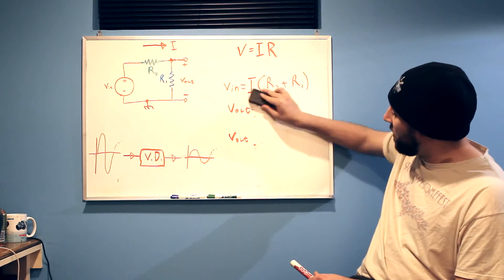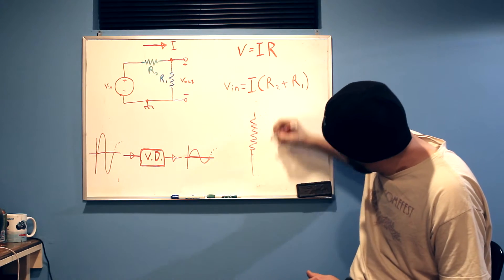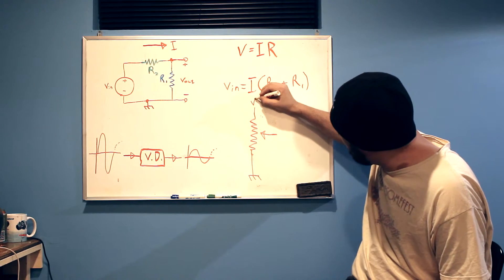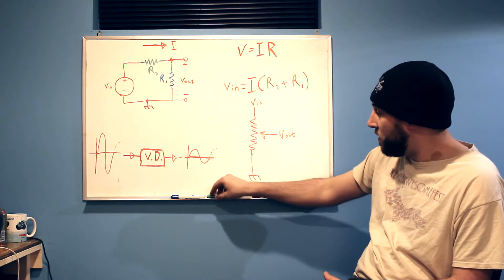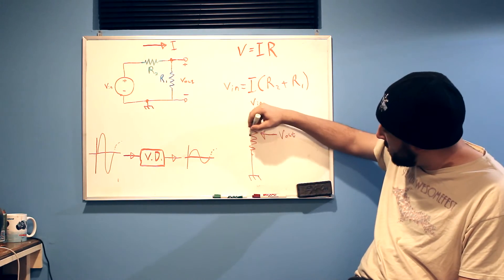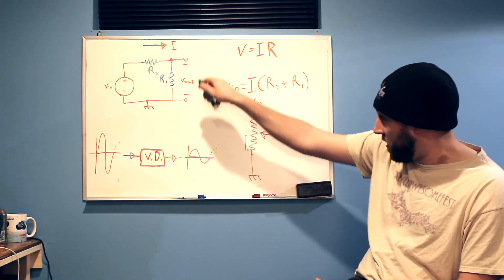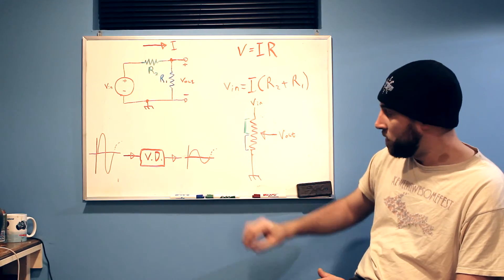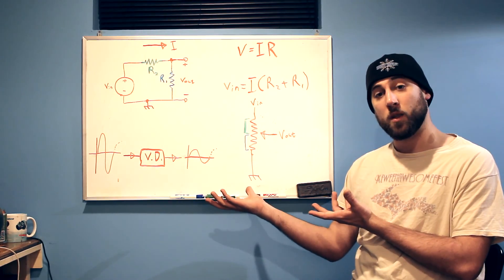A potentiometer is a component that, electrically speaking, uses this symbol. If we make one end ground, the other end V_in, and the wiper tap V_out, you can see we're splitting this resistor in two with the wiper — symbolized by an arrow. The ground-side portion of the resistor is R1 in our circuit, and the top portion is R2. And that is a voltage divider.